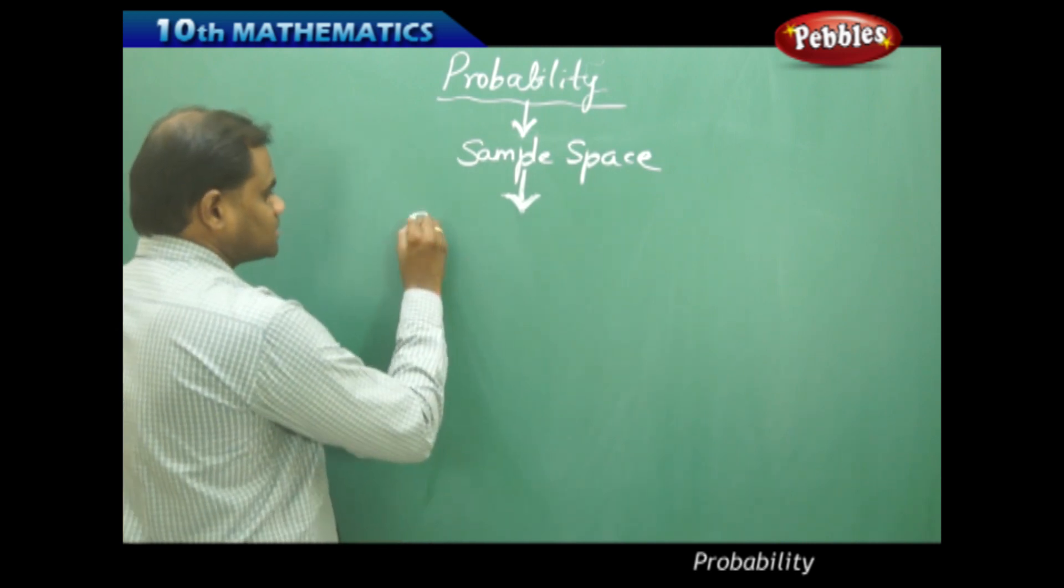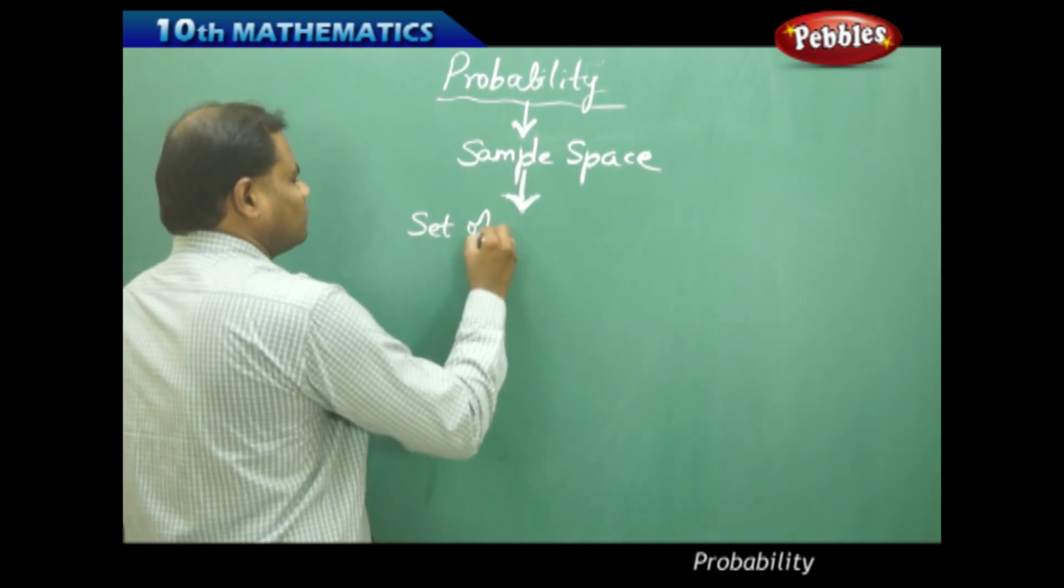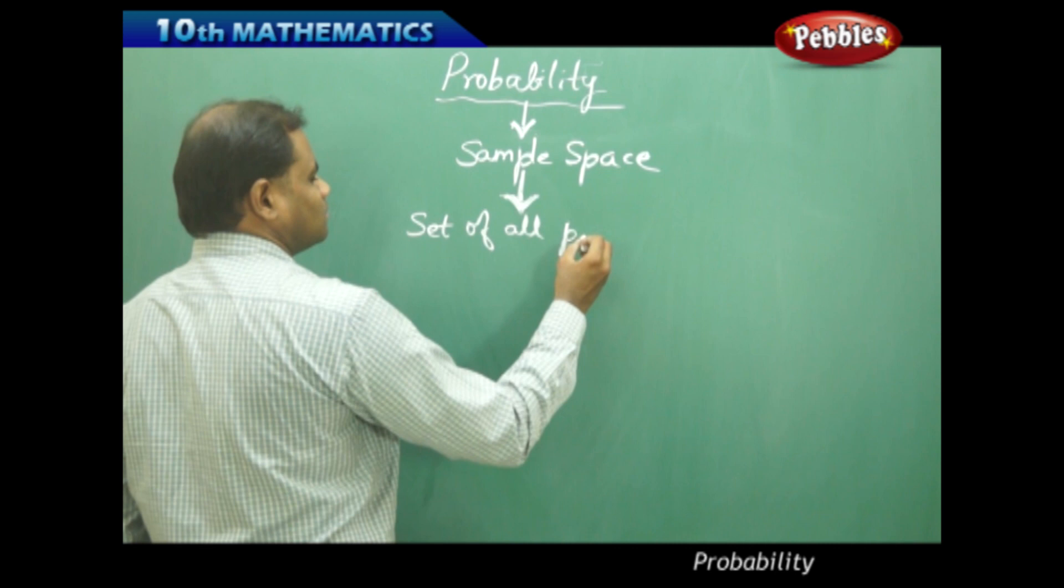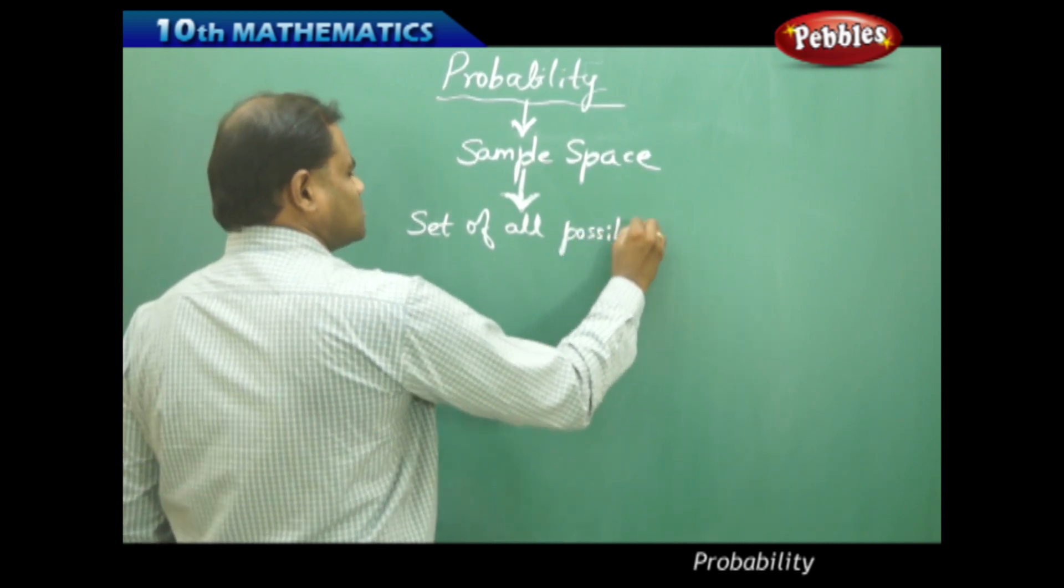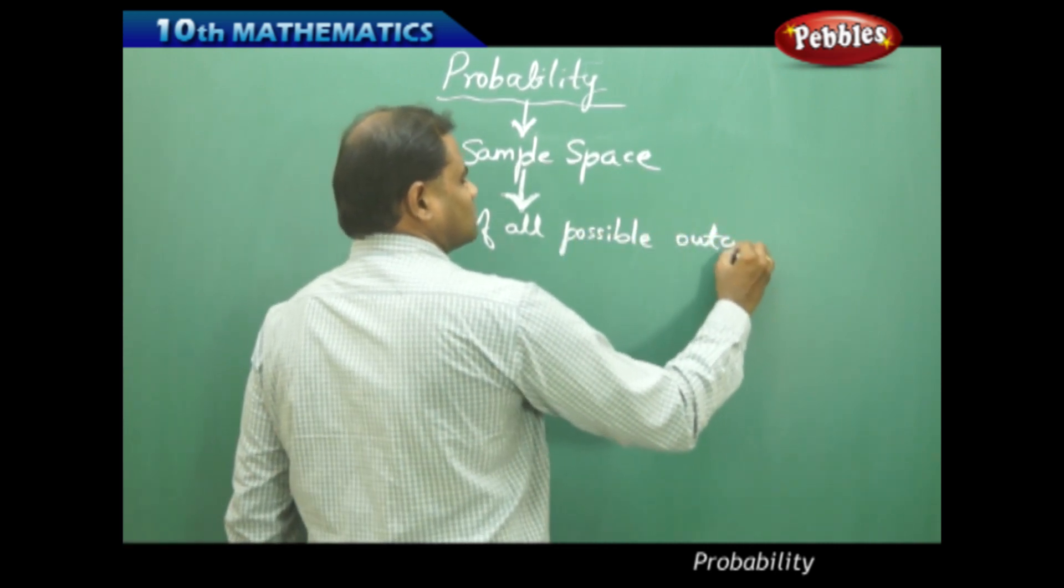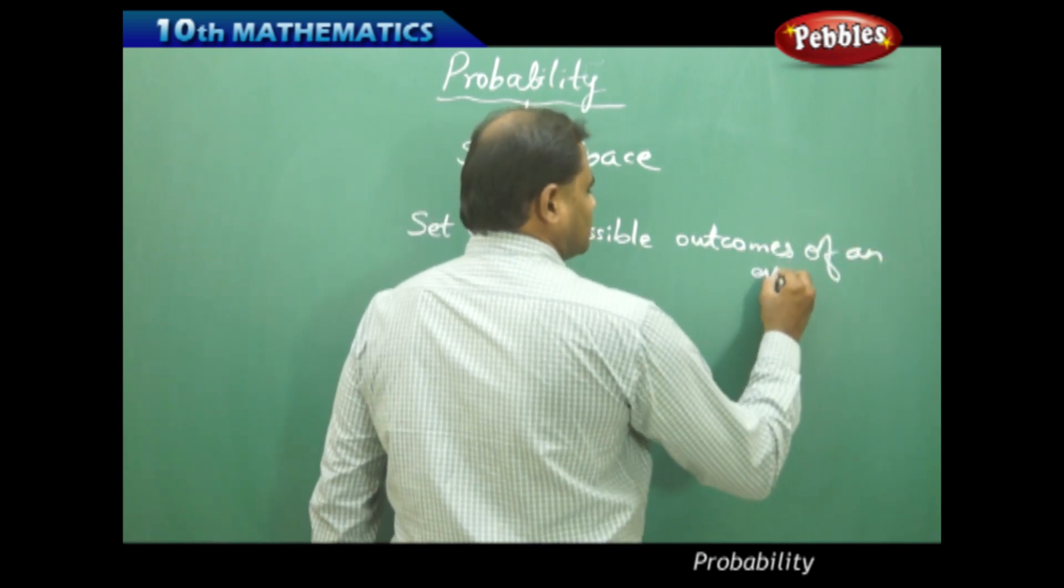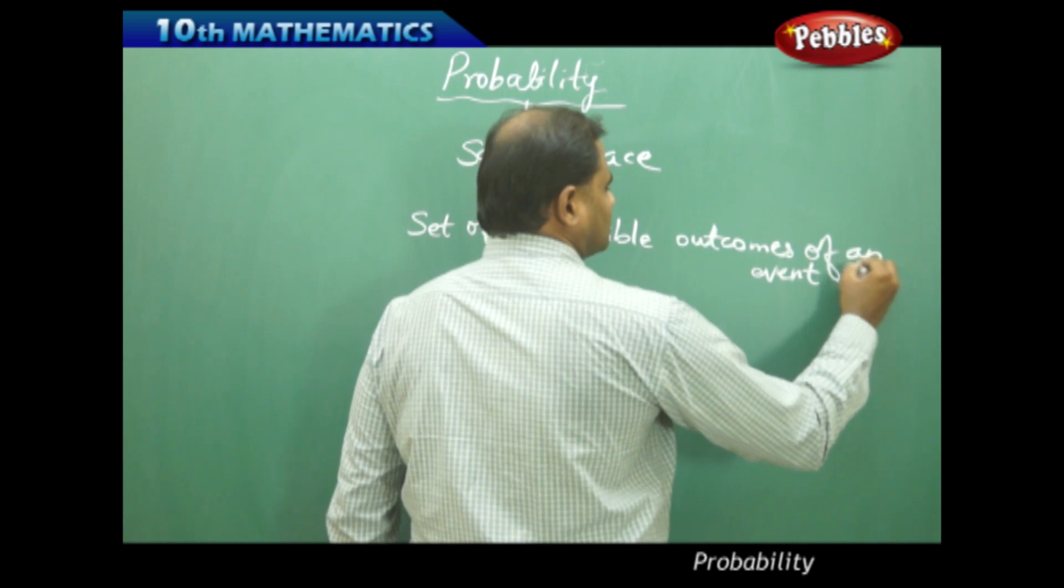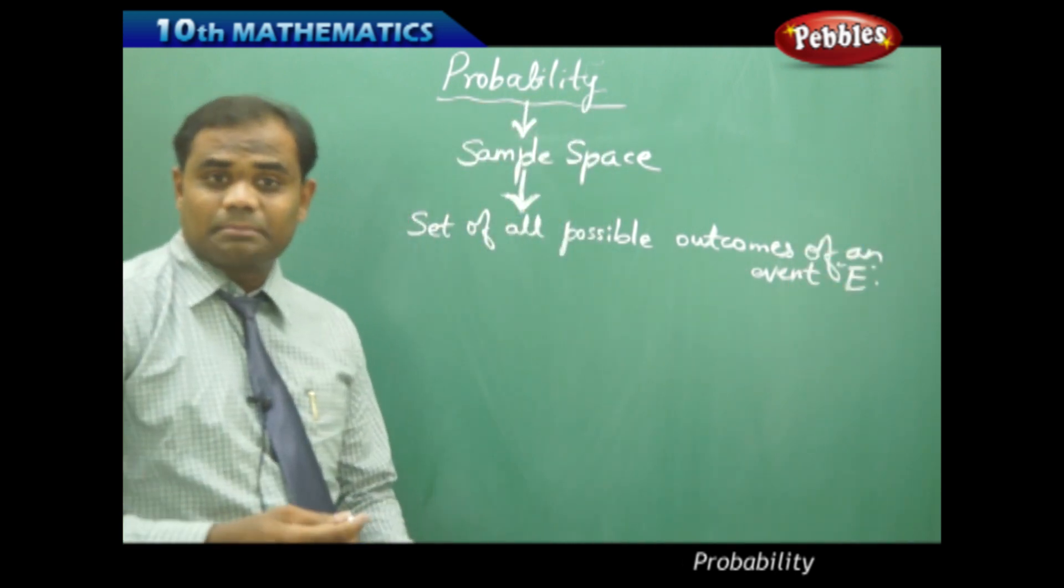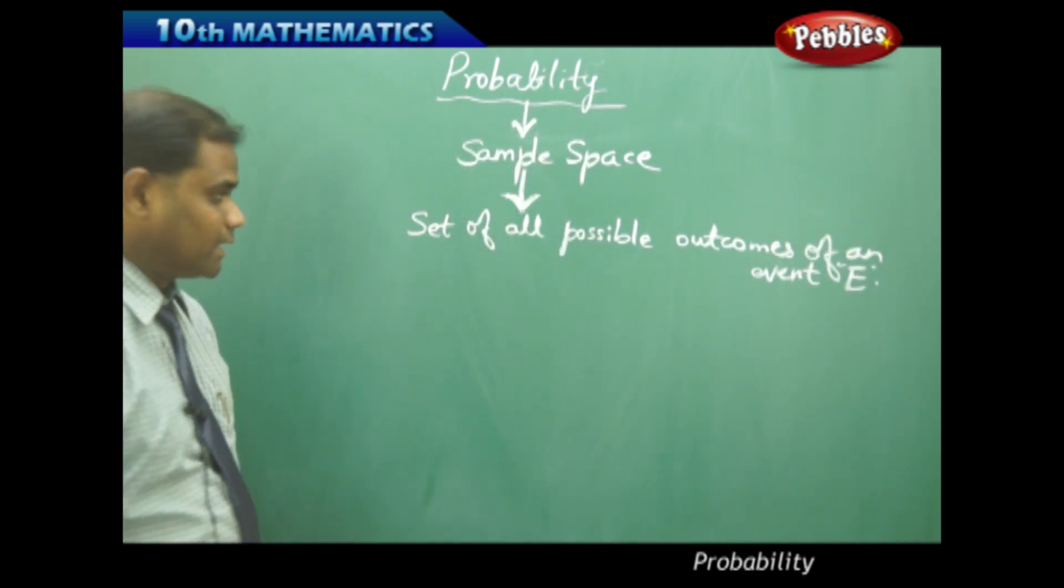What is sample space? The definition says the set of all possible outcomes of an event E is called the sample space.